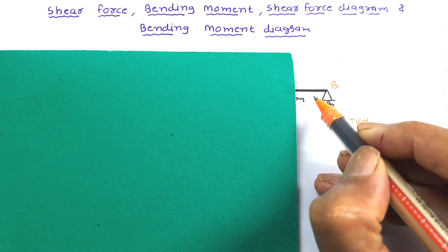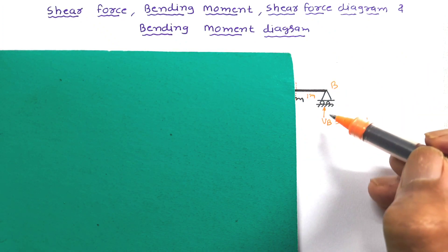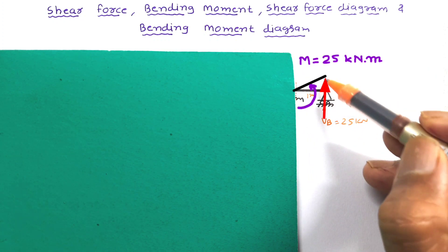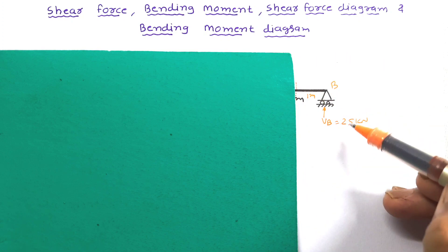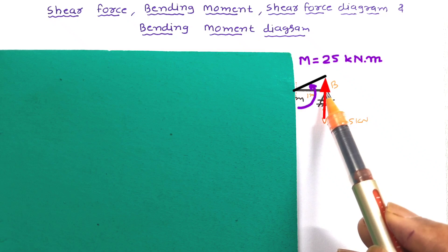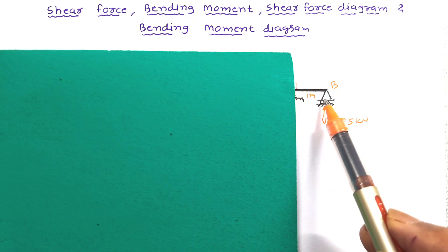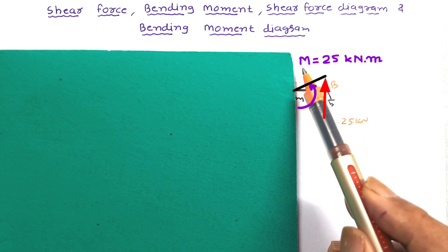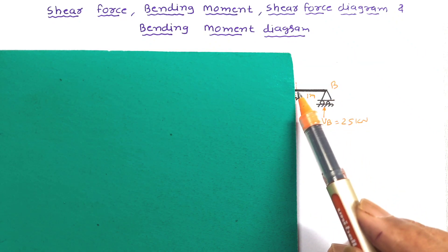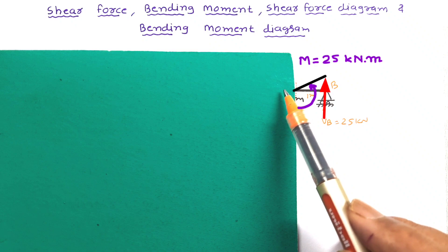Now let us assume that this distance is 1 meter. Due to this 25 kN force, if we find the moment at this section, it will be in the anticlockwise direction and the moment will be minus 25 into 1. So in this portion, this unbalanced moment is acting which tries to bend the beam. Such unbalanced moment at any section of a beam on either side — left side or right side — is called bending moment.